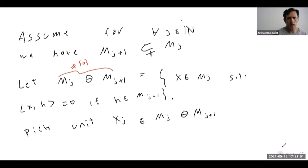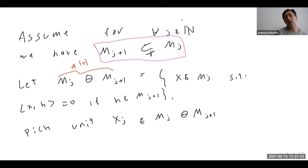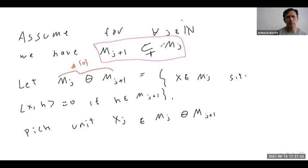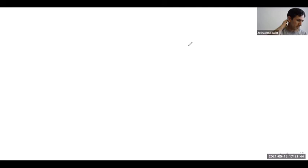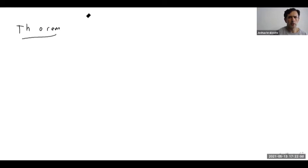This contradiction shows that the assumption that M_{j+1} is always a strict subspace of M_j must be false. So there must exist some j where M_{j+1} equals M_j. We're now almost done with the Fredholm alternative.